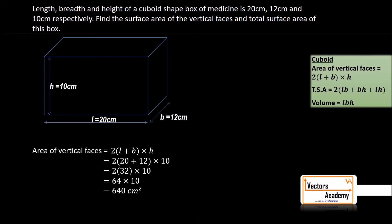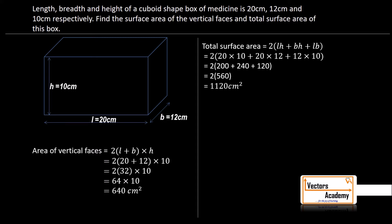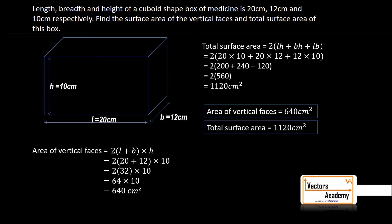The total surface area of the box uses the formula 2(LB + BH + LH). Substituting all given values and calculating, we get the total surface area to be 1120 cm². In this exercise we just directly need to use the formula, substitute all the given values, and we will directly get the answer.